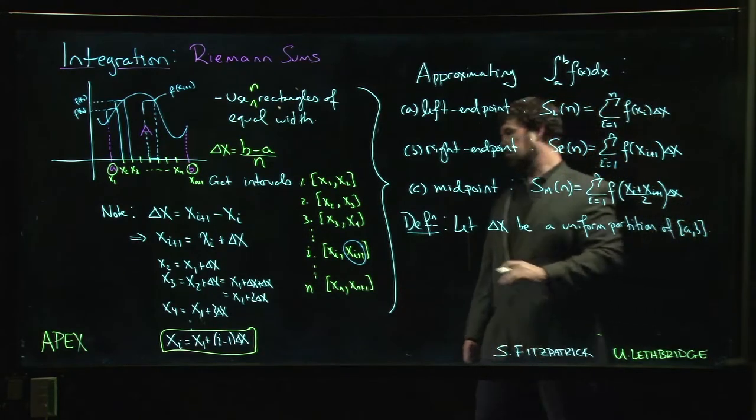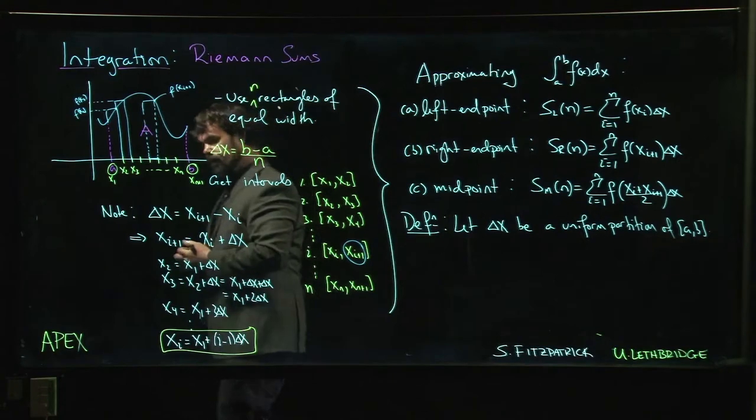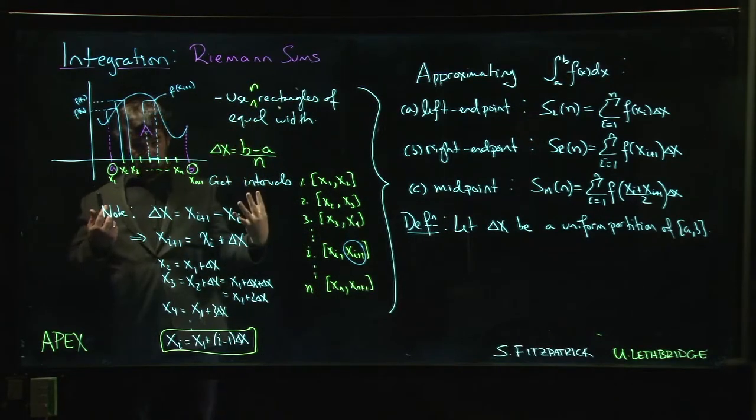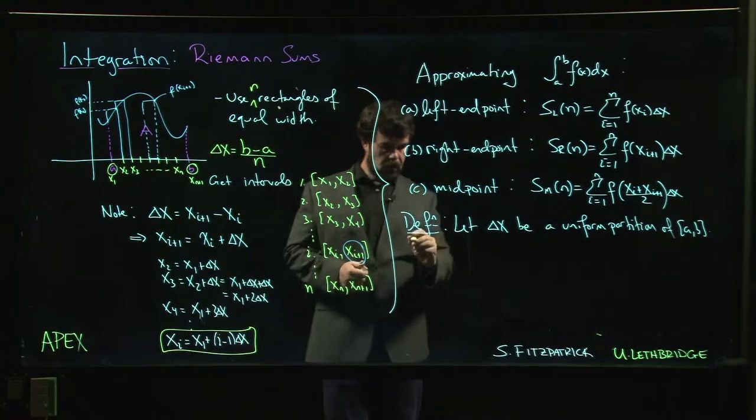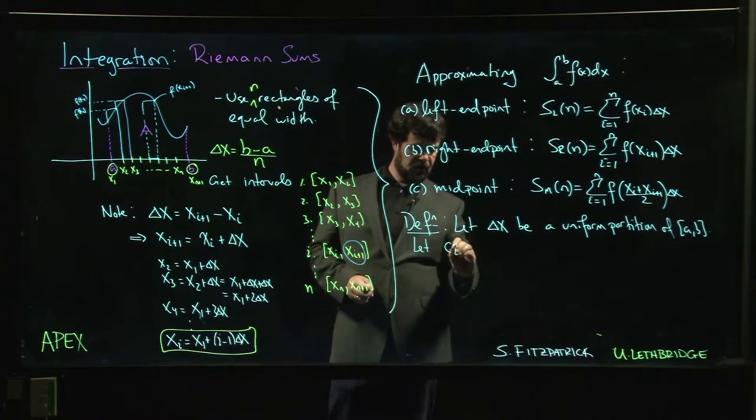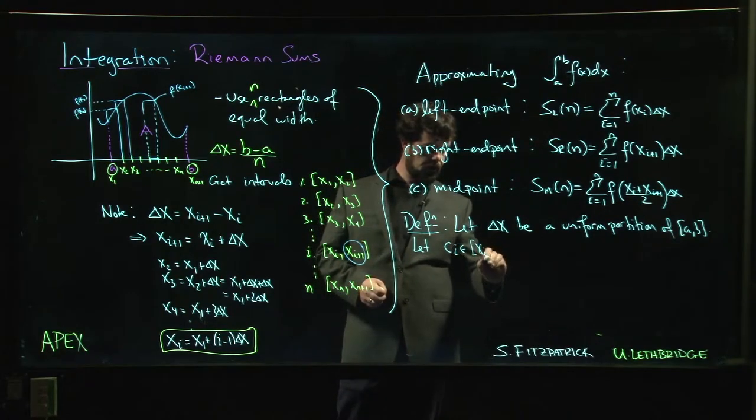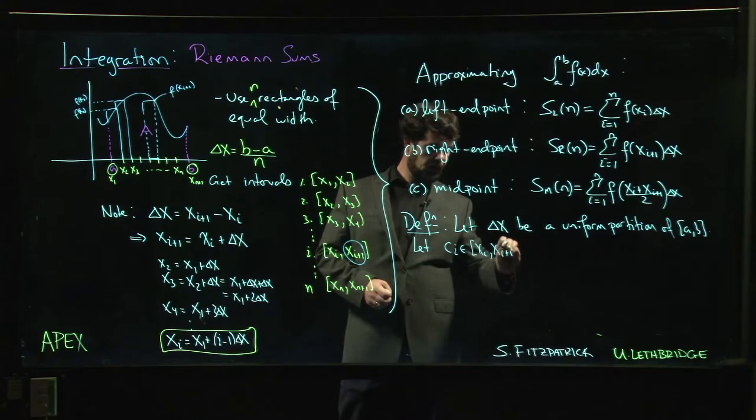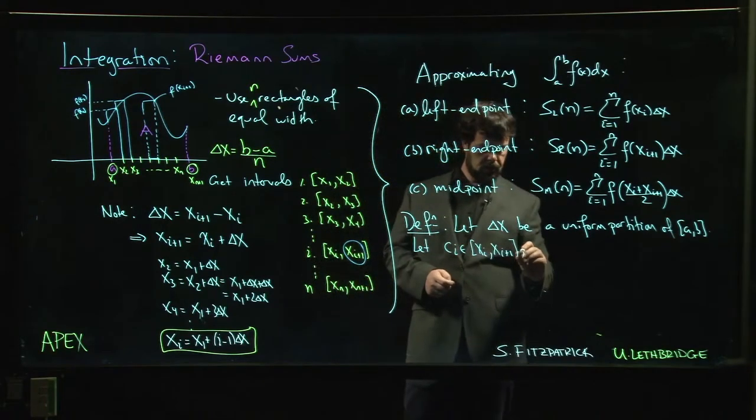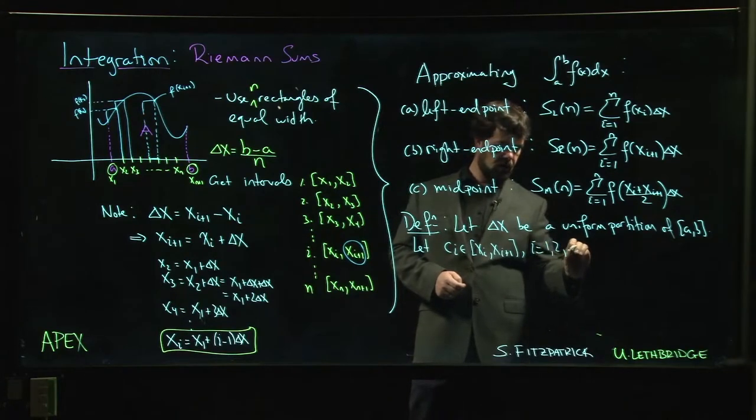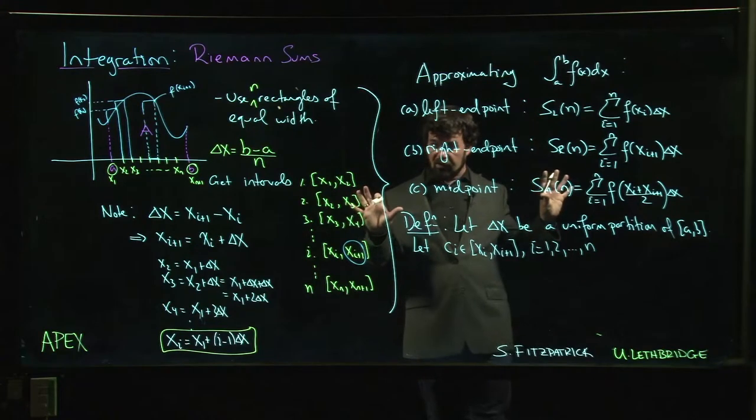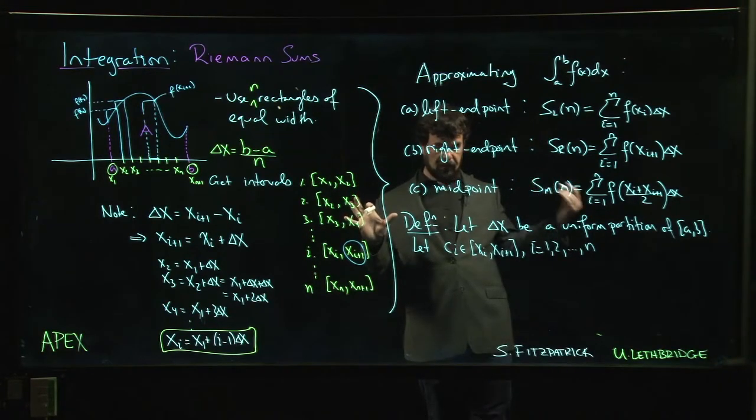Okay, so it's exactly as we see here. So whenever we're using equal width, this is called a uniform partition. Let c_i belong to the i-th subinterval, so between x_i and x_i plus 1. We're going to do that for i equals 1 to n, and we choose these however we want. We're not actually going to say anything about how we choose these c's, just that for each interval we're going to choose one.